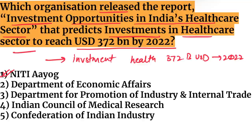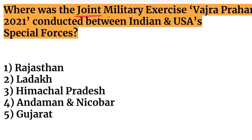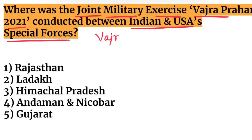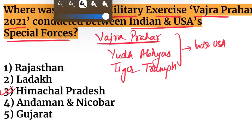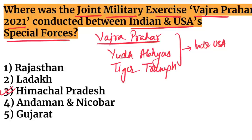Next question: where was the joint military exercise Vajra Prahar 2021 conducted between India and USA's special forces? Vajra Prahar is a military exercise between India and USA. Also remember exercises Yudh Abhyas and Tiger Triumph — all three are conducted between India and USA. Vajra Prahar 2021 was conducted in Himachal Pradesh.